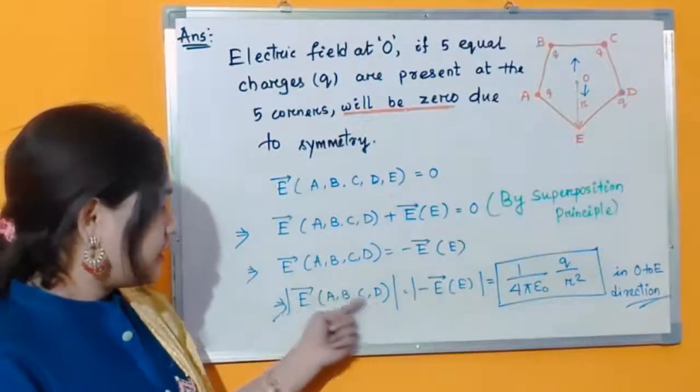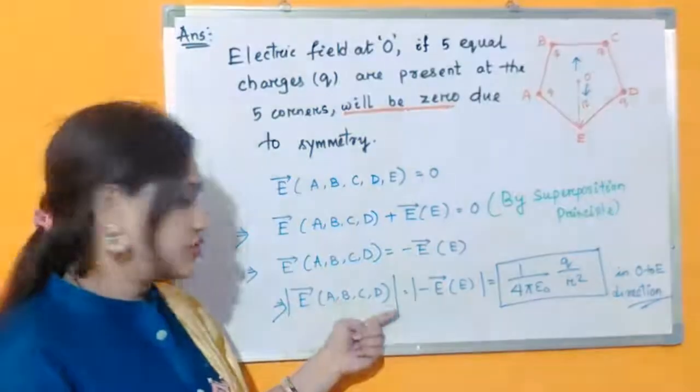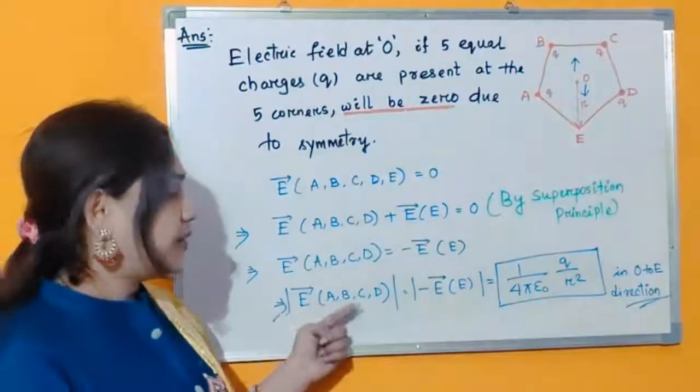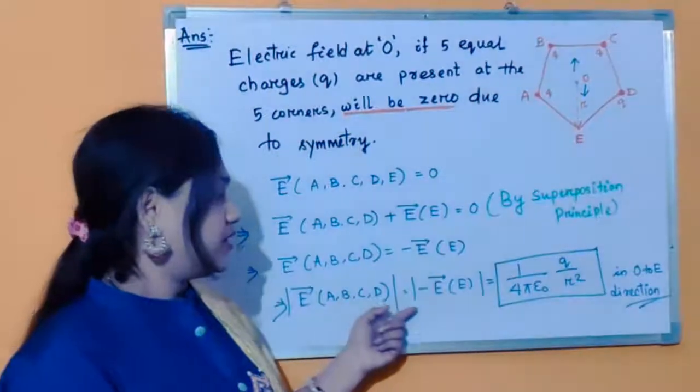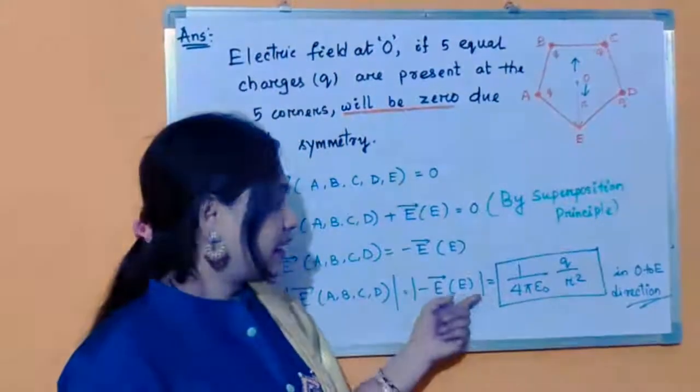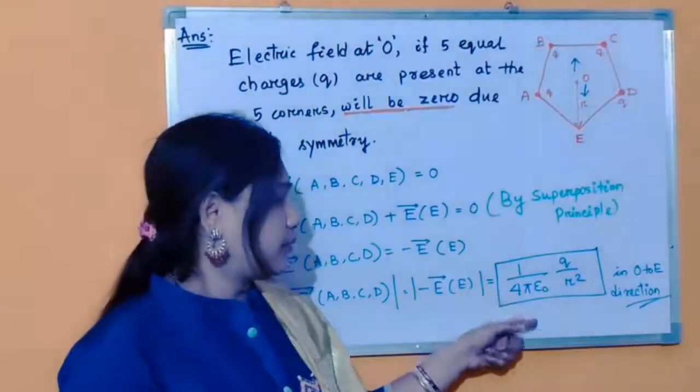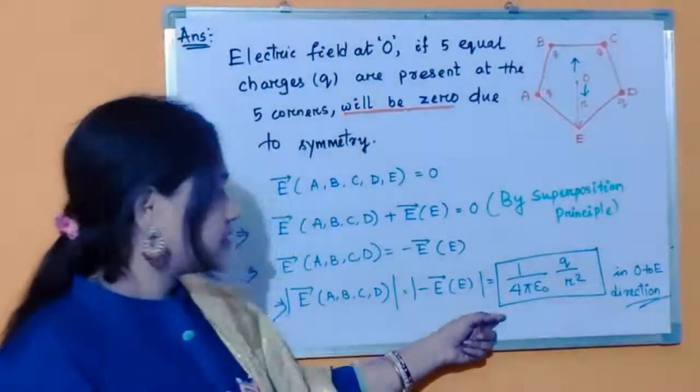Finally we concluded here by taking the magnitude. The electric field of A, B, C, D of magnitude equal to the electric field of E, and that is equal to 1 by 4π epsilon 0 Q by R squared.